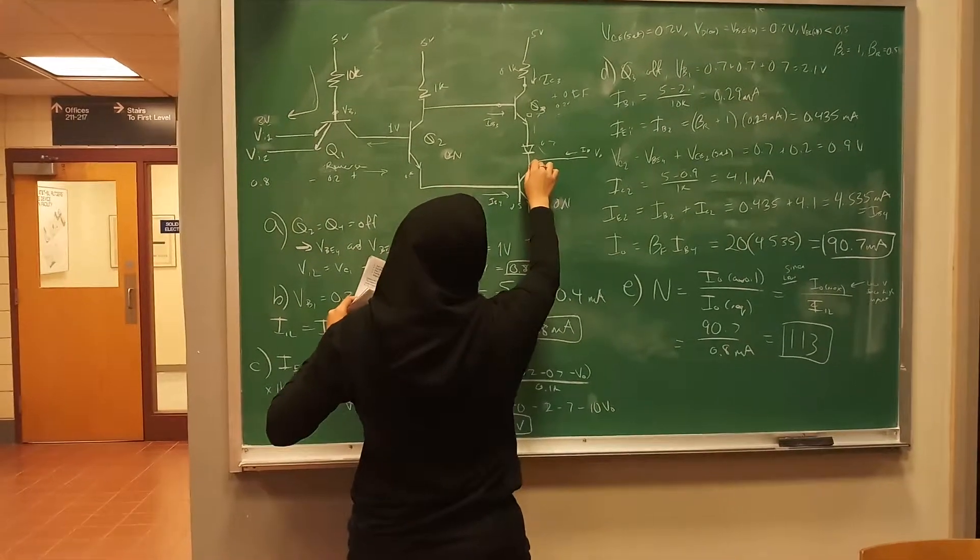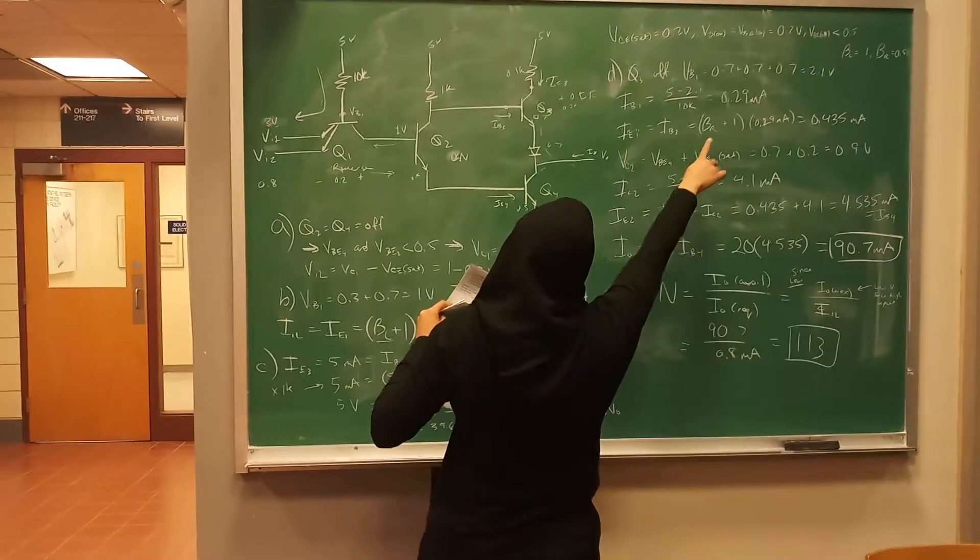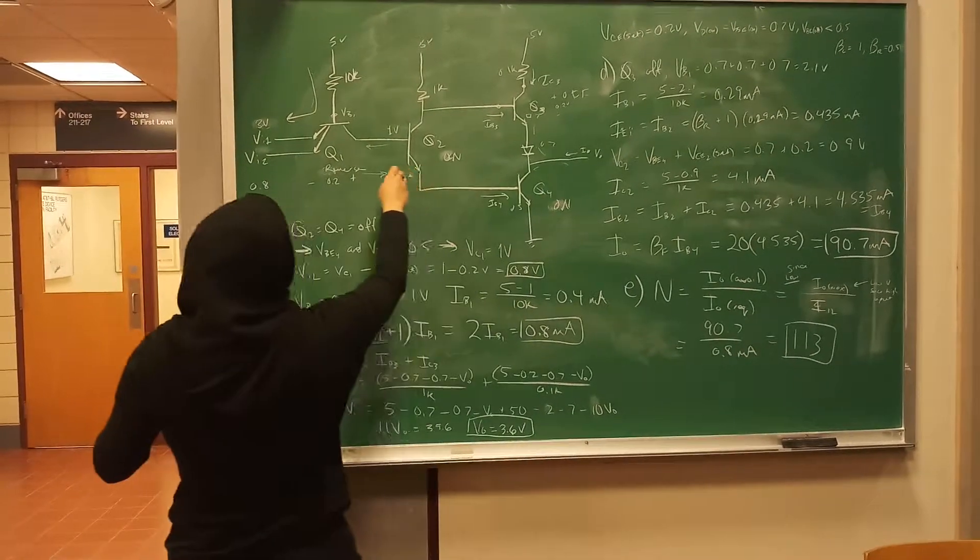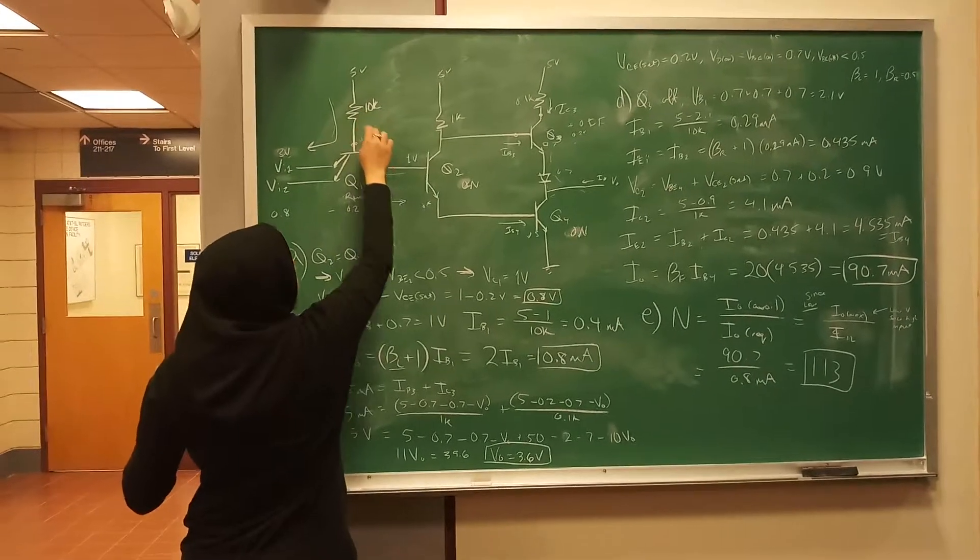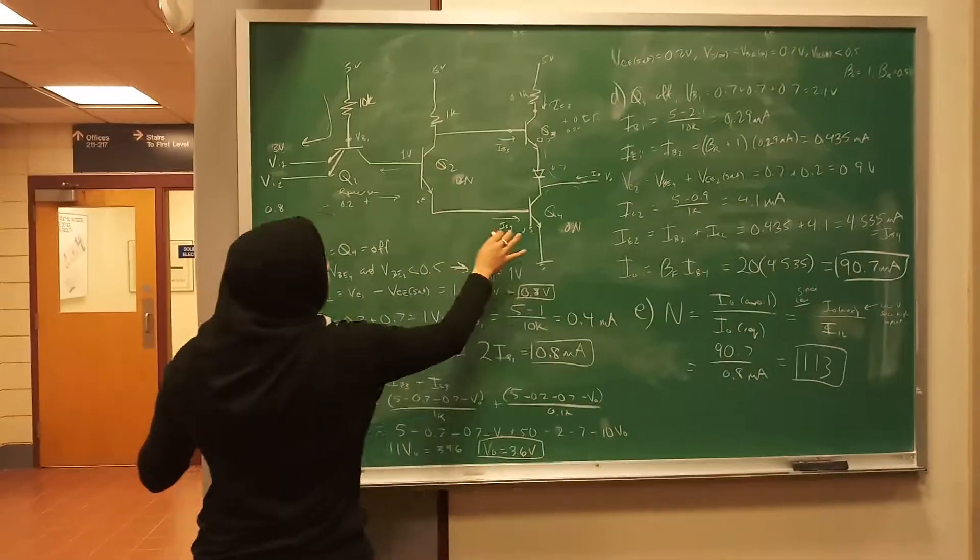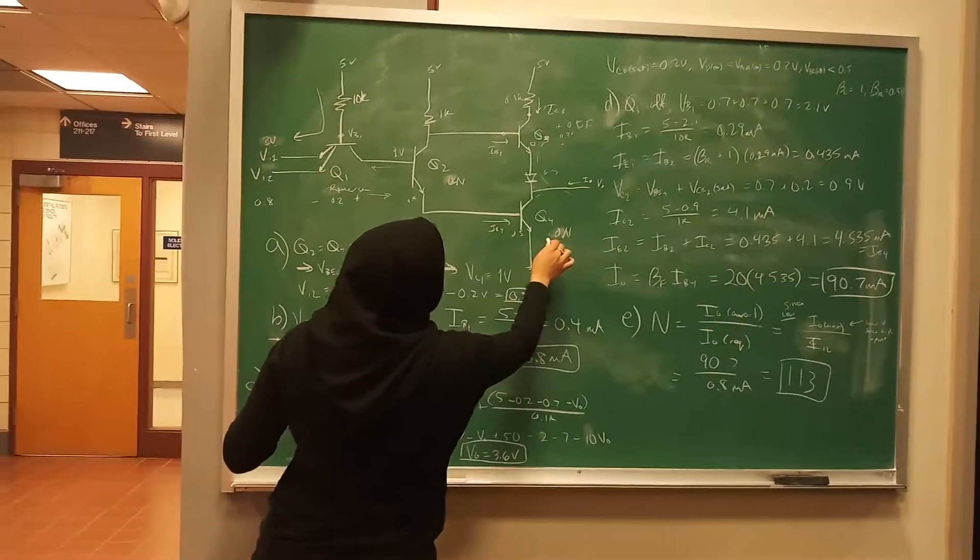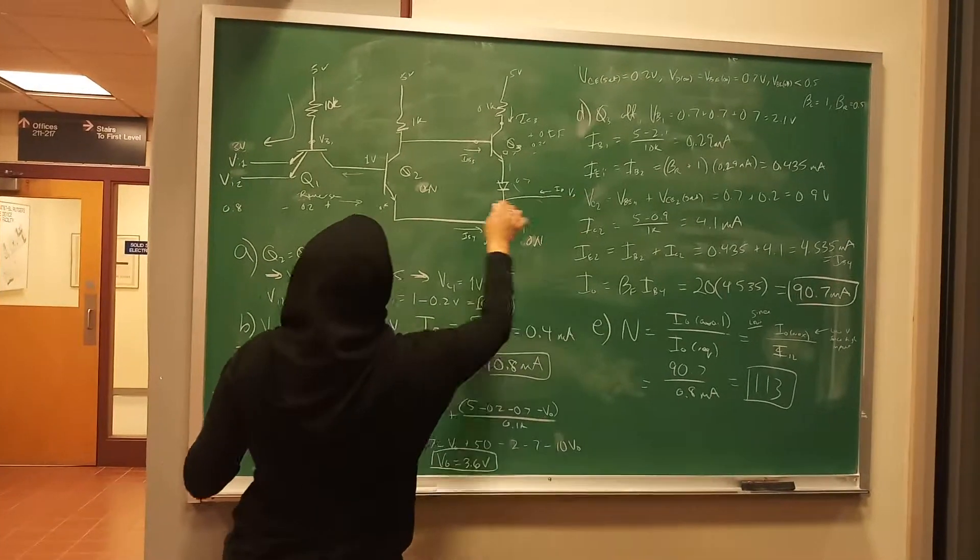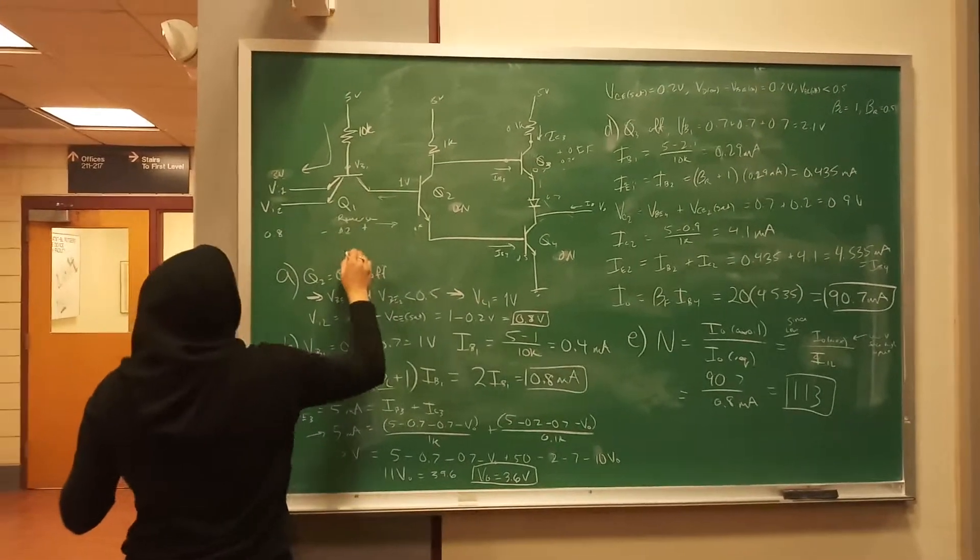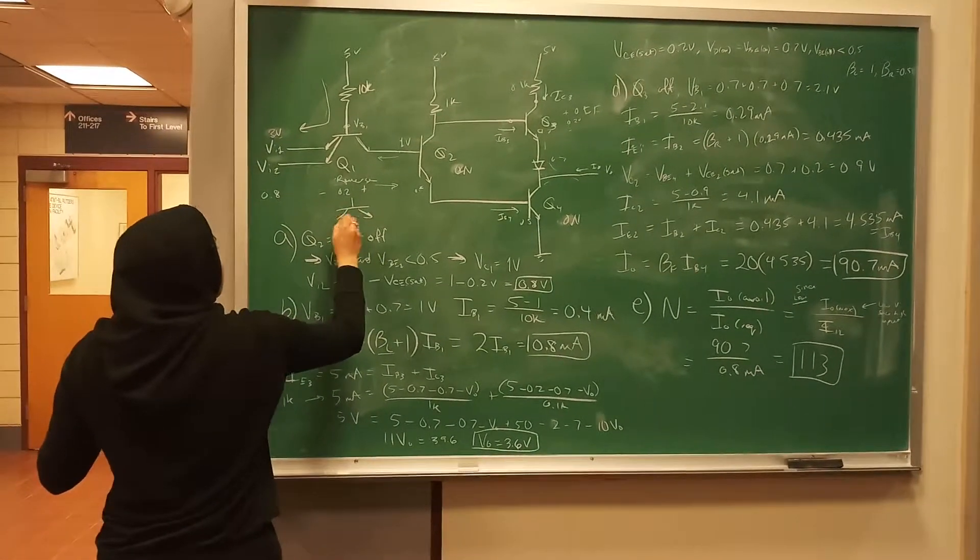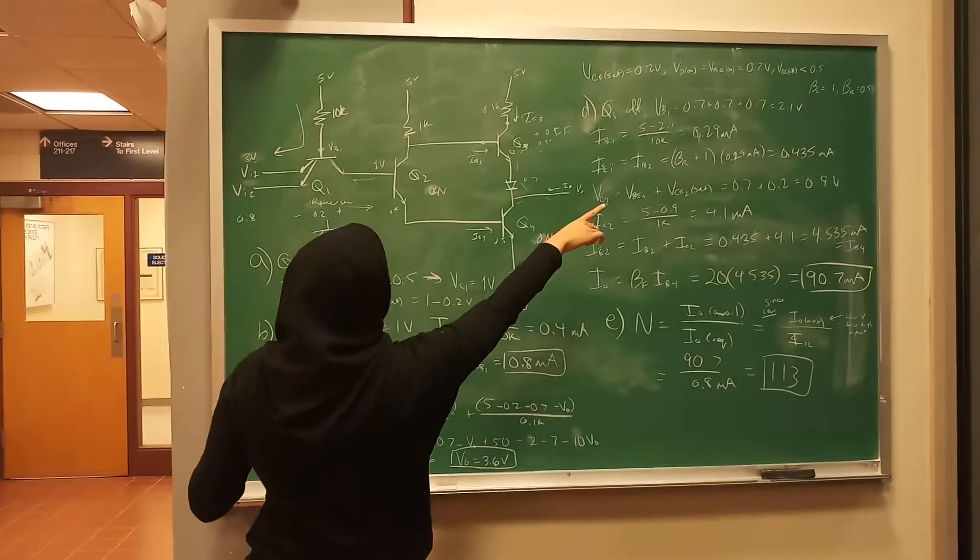And you want to get the I_C of this, because you know this is off. So that's what this is. So to get that, you have to do all these steps. So I_B1 is here. 5 minus 2.1, because now you know that these are on. So this is going to be 0.7. Yes, I_B1 is here. So it's 0.7 plus 0.7, plus 0.7 here, because now it's in reverse. So the transistor is this way. So this is 0.7 here. So you get 5 minus 2.1 over 10k is 0.29 milliamps.